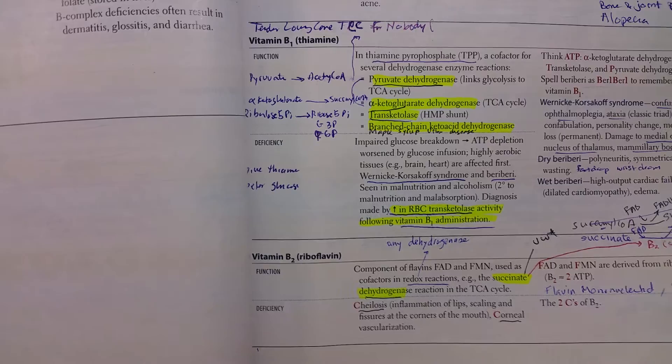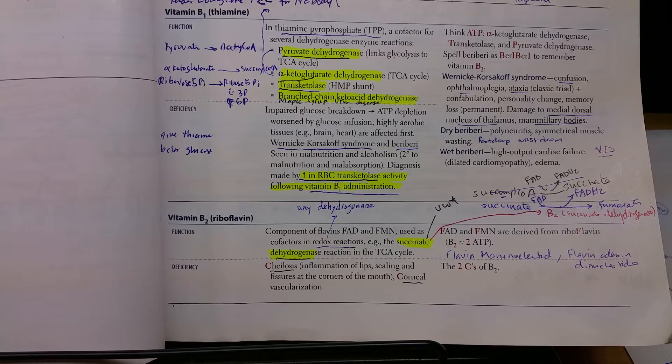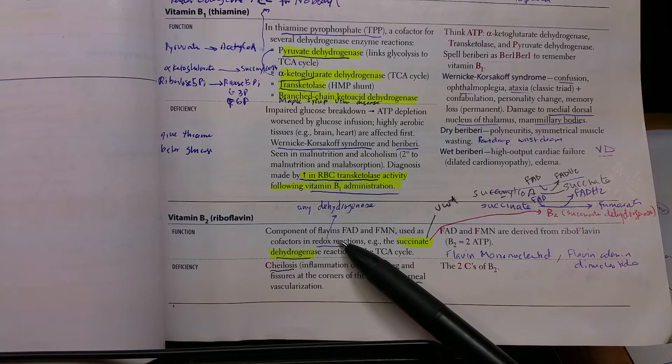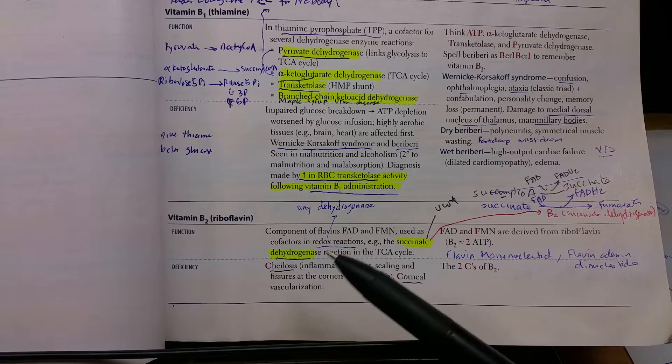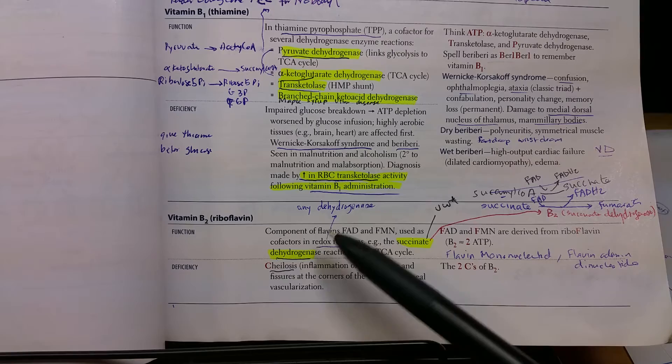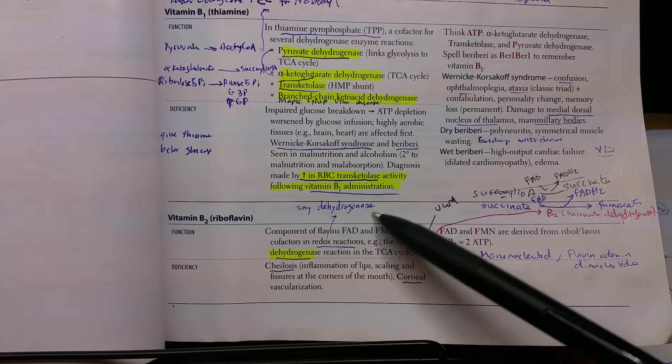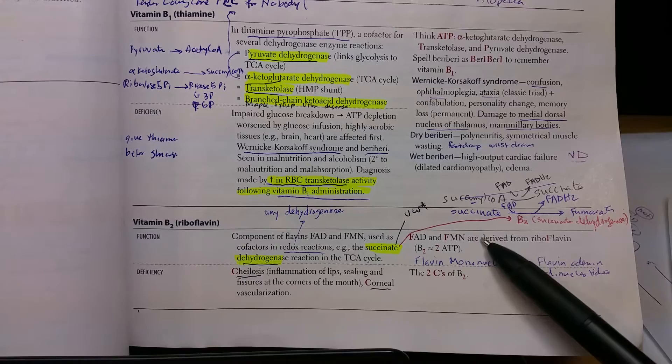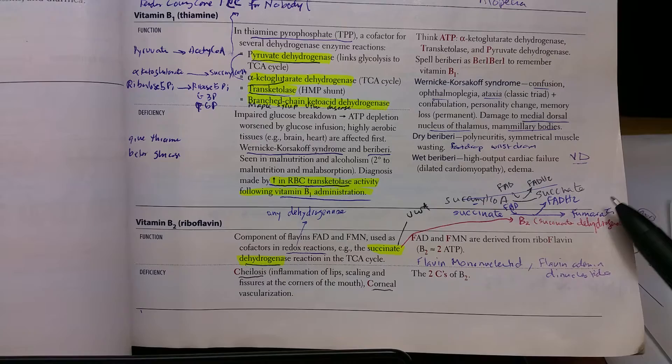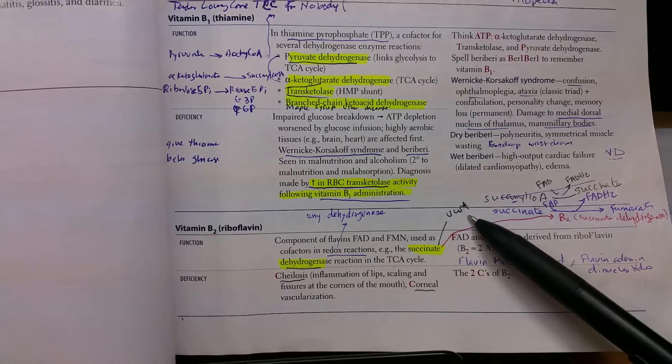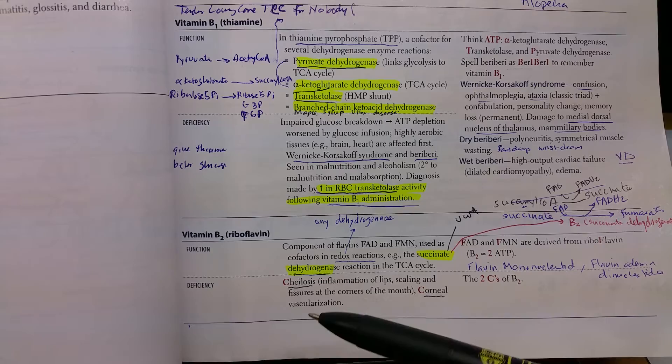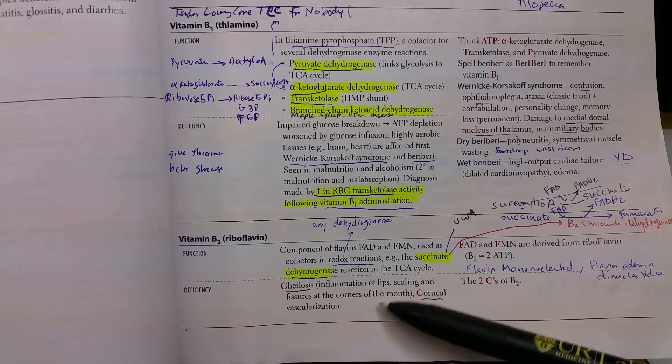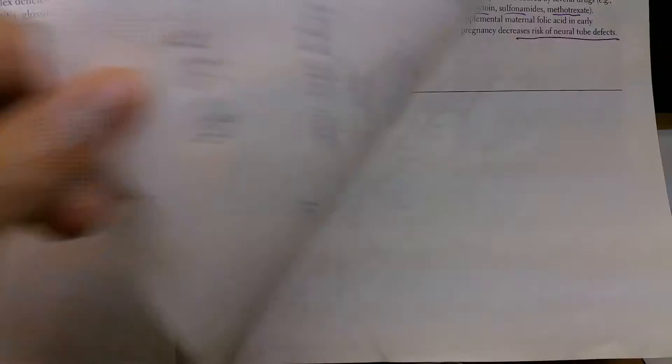Vitamin B2, or riboflavin, has two forms: flavin adenine dinucleotide, FAD, and flavin mononucleotide, FMN. It's also used as a cofactor in redox reactions, which are dehydrogenase reactions. One example you need to know is succinate dehydrogenase, which is used to convert succinate into fumarate within the Krebs cycle. The deficiency causes cheilosis, which is inflammation of the lips or corners of the mouth, and corneal vascularization.